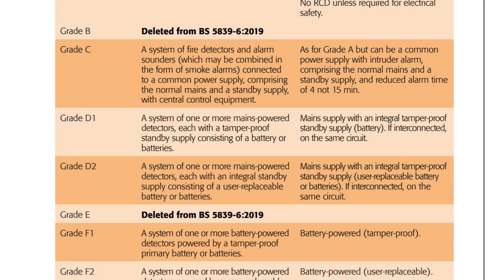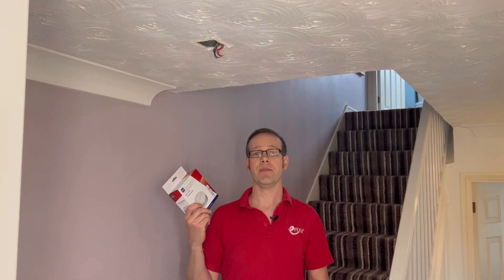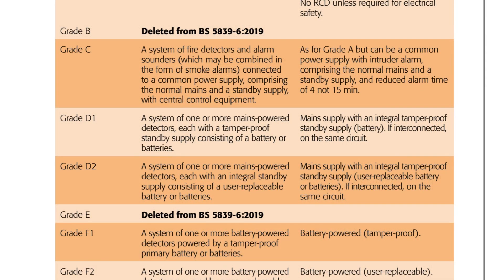Next is the Grade D system, which splits into two parts: D1 and D2. A D1 system is defined as a system of one or more mains-powered detectors each with a tamper-proof standby supply consisting of a battery or batteries. So now we're in the realm of a typical domestic fire alarm system. The D2 system is similar — a system of one or more mains-powered detectors each with an integral standby supply consisting of a user-replaceable battery or batteries.